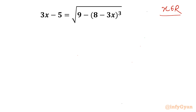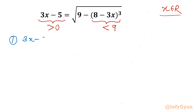Let us get started by writing the domain of the equation first. The square root radical is involved, so the square root will give a positive result. So the left hand side must be positive. Condition number 1: 3x minus 5 should be positive, so 3x should be greater than 5, or x should be greater than 5 over 3, which is approximately 1.67.